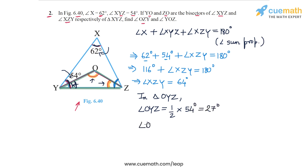And angle OZY, which is this angle, this is equal to half of angle XZY, angle XZY we calculated as 64. So half into 64. So that's 32 degrees. And finally, we can now apply the angle sum property in triangle OYZ.